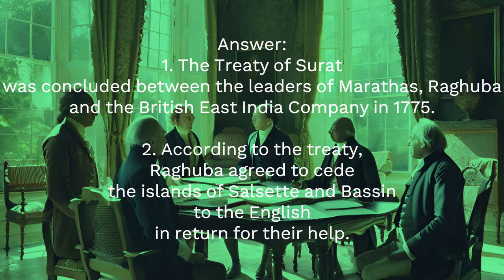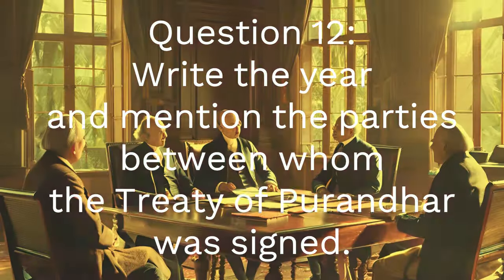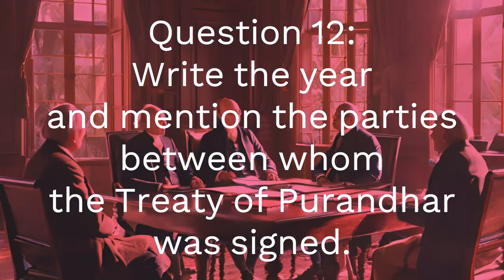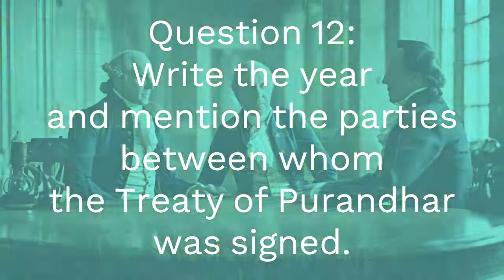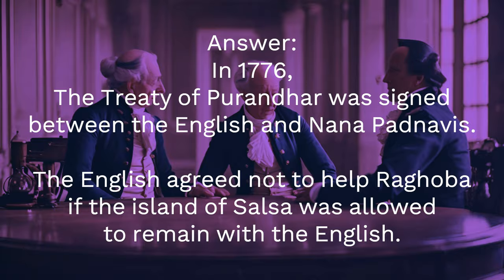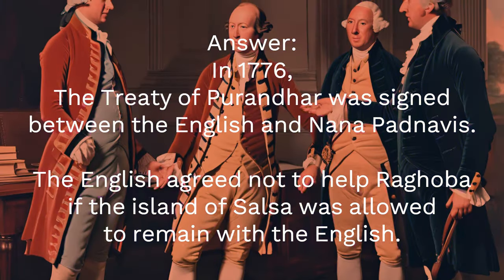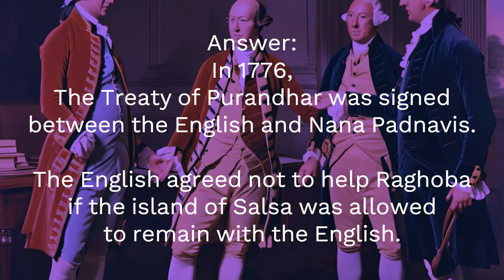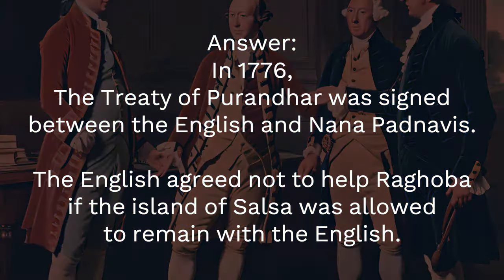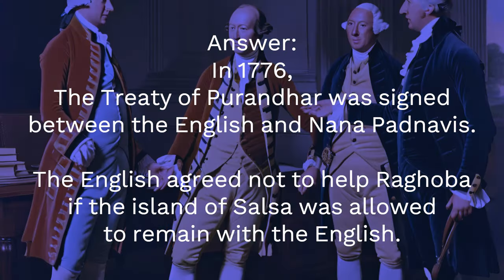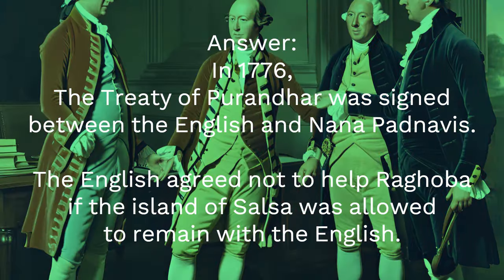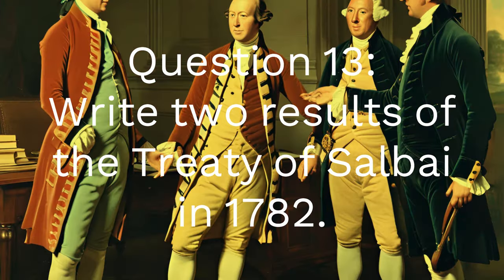Question 12: Write the year and mention the parties between whom the Treaty of Purandhar was signed. Answer: In 1776, the Treaty of Purandhar was signed between the English and Nana Farnavis. The English agreed not to help Raghunath Rao if the island of Salsette was allowed to remain with the English.